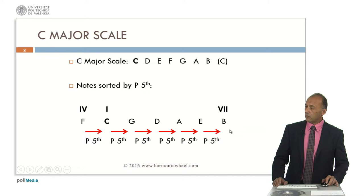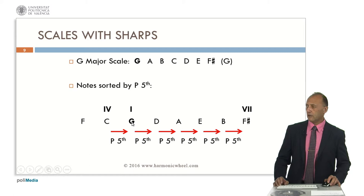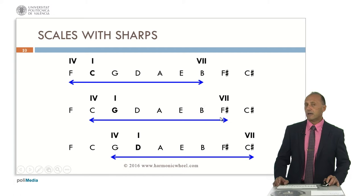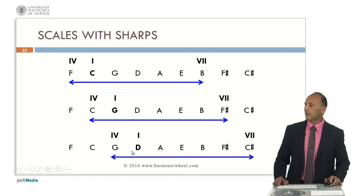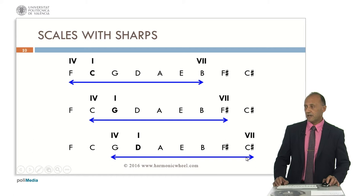Following this process, we can include a new perfect fifth above the last note B, which is F-sharp. And this way, we obtain a new major scale, which is G major. Remember that the second note is the tonic. We can go on with this process by adding other perfect fifths on the right of this diagram, obtaining first the G major scale, and then the D major scale. In all these cases, we always use the same seven names for the notes. The only difference is that in C major all the notes are natural, in G major we change F to F-sharp, and in D major we change F and C to F-sharp and C-sharp.